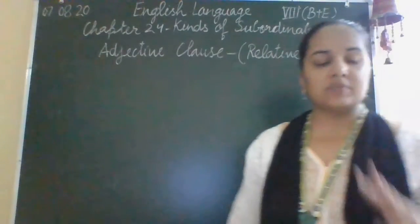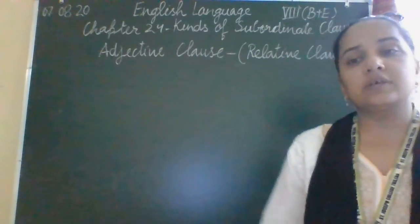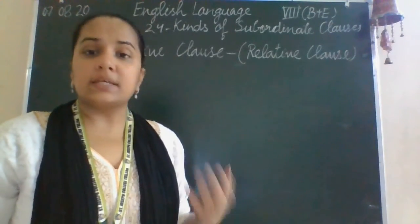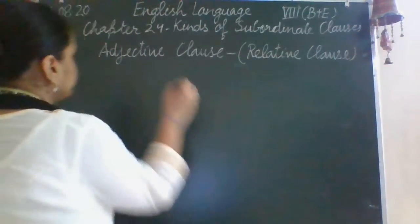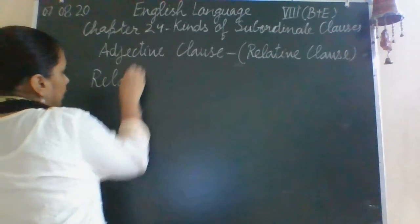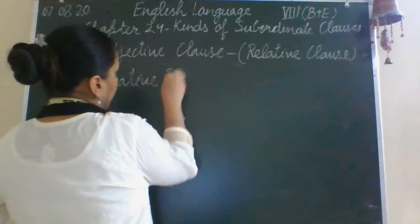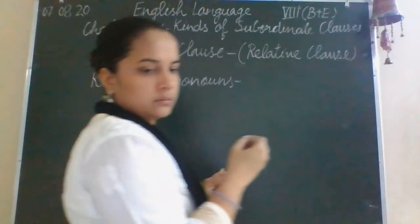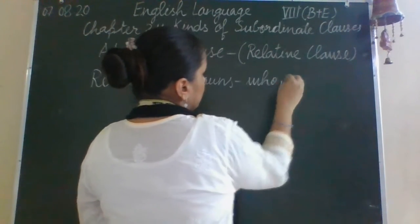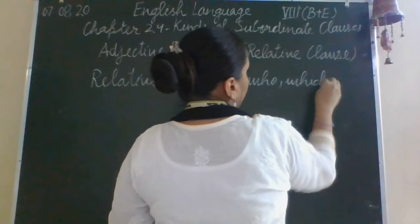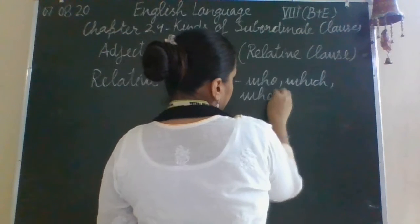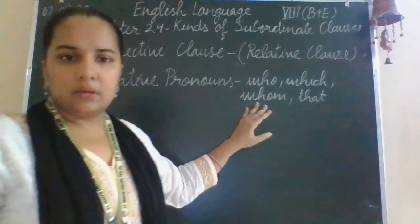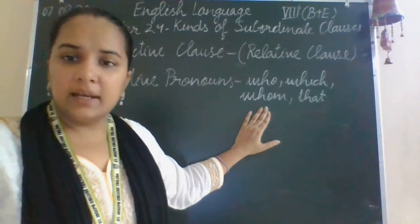Here I use two terms: the relative pronoun and the relative adverb, which are used with the adjective clause. The relative pronouns are: who, which, whom, and that. Whenever we use all these in a sentence, they are known as the relative pronouns.